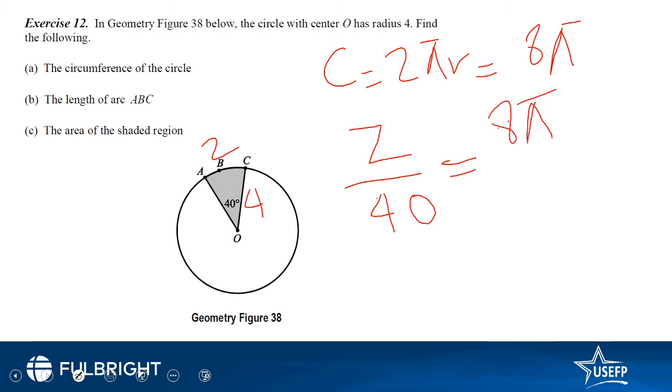The circumference angle makes with the center makes an angle of 360 degrees. So the answer of this is 8 pi over 9.